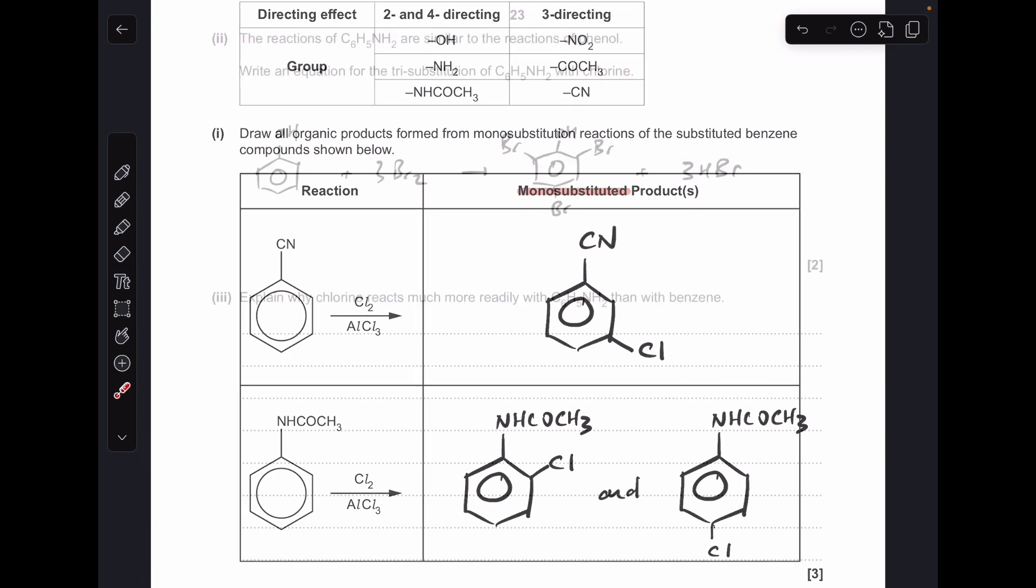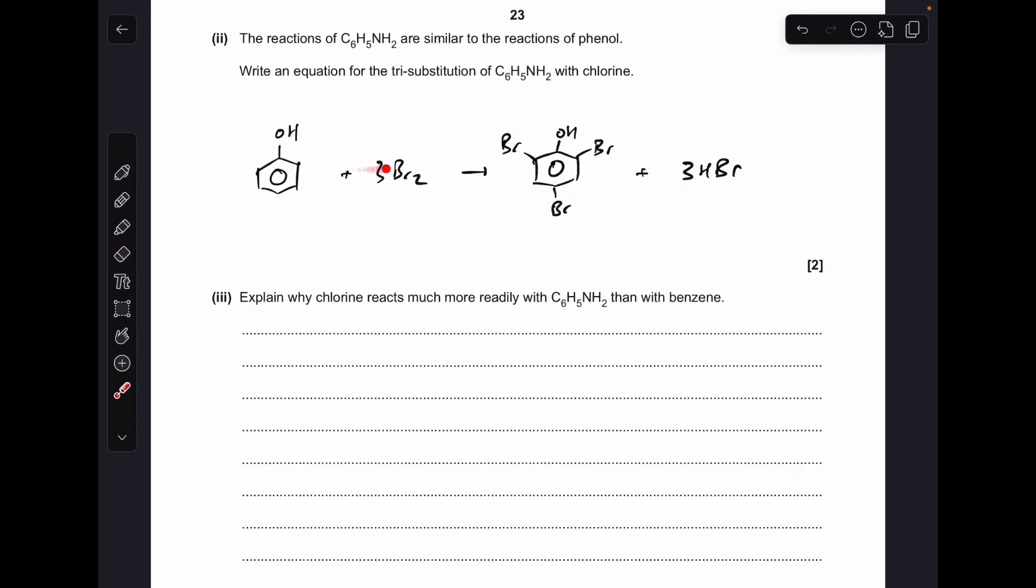For the next part, just a reminder of the reaction between bromine and phenol, where you get the tri-substituted product. We get this 2,4,6-tribromophenol and three moles of HBr. All we've got to do is apply that to this phenylamine molecule.